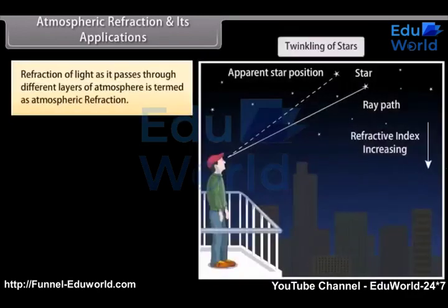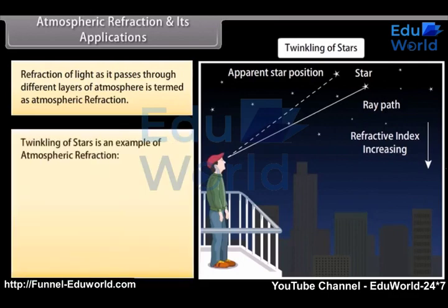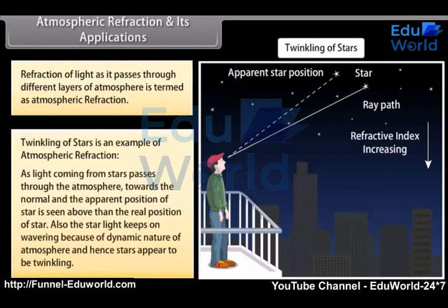Atmospheric refraction and its applications. Our atmosphere is not uniformly dense. Depending on local conditions, it may have hot and cool air near the ground. Hot air is lighter than cooler air and hence has a lesser refractive index. Due to this, starlight or sunlight entering the atmosphere undergoes refraction, known as atmospheric refraction. As light from stars passes through the atmosphere, it bends towards the normal and the apparent position of the star is seen above its real position. The starlight keeps wavering because of the dynamic nature of the atmosphere, and hence stars appear to be twinkling.